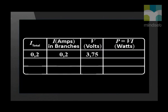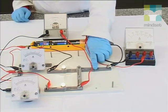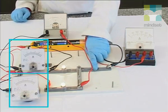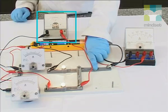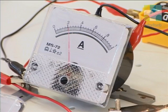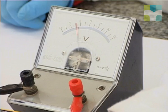You will note that since there are no branches at the moment, the total current to the circuit is the same throughout. Now we add a second light bulb in parallel. We put an ammeter in series in each branch to determine the branch currents, and connect the voltmeter across both light bulbs. The ammeter in the main circuit now reads 0.4 amperes, the ammeter in each branch reads 0.2 amperes, and the voltmeter reads 3.5 volts.